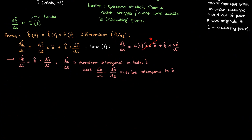We now have that db/ds is orthogonal to the tangent vector t and orthogonal to dn/ds, which is itself orthogonal to n. This leaves only one possibility: db/ds must be parallel to the unit normal vector n̂. Since n̂ is orthogonal to t and orthogonal to dn/ds, it follows that db/ds is parallel to n̂. This allows us to write db/ds = -tau(s) · n̂, where the negative sign is the typical convention, mainly because it makes the algebra simpler with fewer negative signs later on.